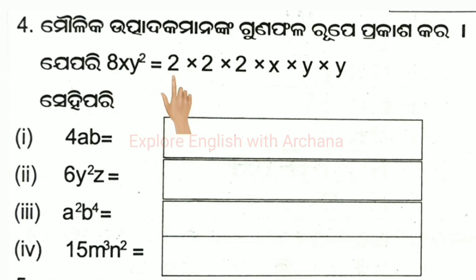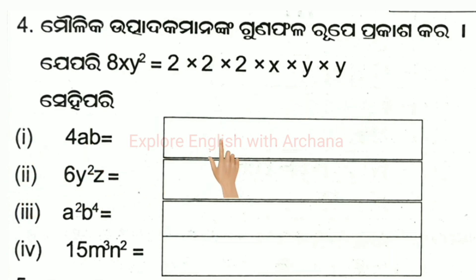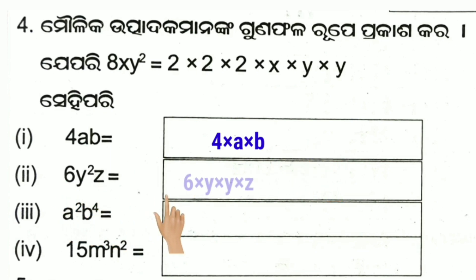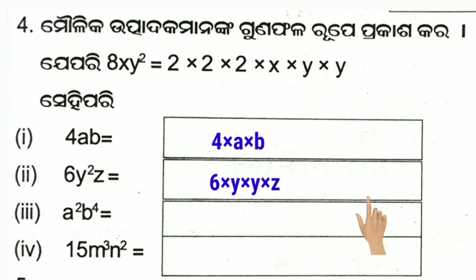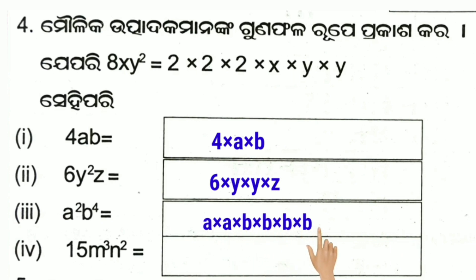y to the power 5 — this is the 4th number. y to the power 4, a square, b to the power 4: a into a, b to the power 4 means b into b into b into b.